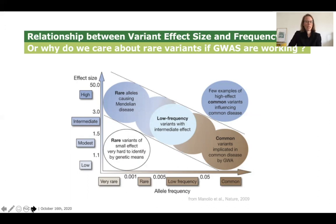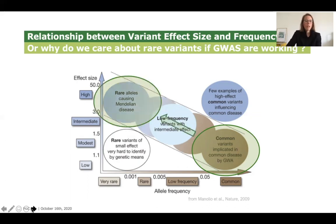Genome-wide association studies have been very successful in identifying genetic factors implicated in MDD. But why are we interested in additional rare genetic variants if we already have these common variants? The reason is that common variants only harbour very small effect sizes. The identification of rare alleles, which are expected to harbour larger effect sizes, would be very beneficial because they are much better able to inform the underlying biology of the disease — and to me, that is the main reason why I'm interested in studying the genetics of MDD.